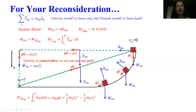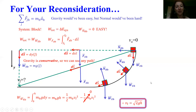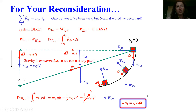Setting that equal to the change in translational kinetic energy of the block, with the initial speed zero, the final speed of the block is the square root of two times g times h. No matter what path the block actually took, we get this exact same answer. We could do this for any crazy-shaped ramp, even one that went up and then came back down. At the end of the day, all that matters is the change in vertical height to figure out the final speed of the block.